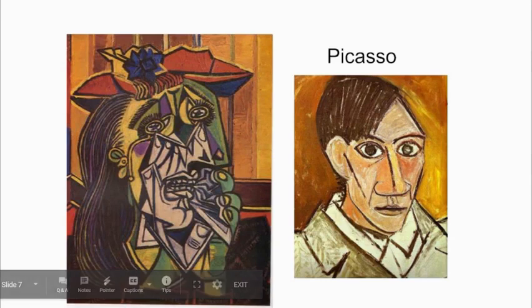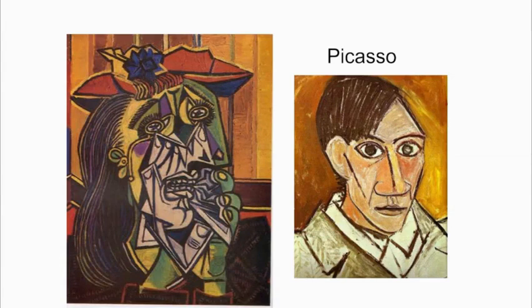One way that you can show that something is cubism is by breaking it up into shapes. He's done that on this one by putting the lines on it. You can write that on your sheet.